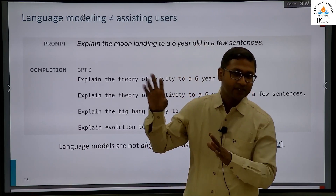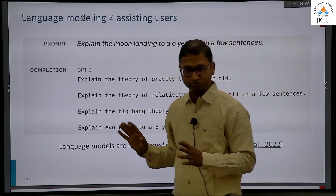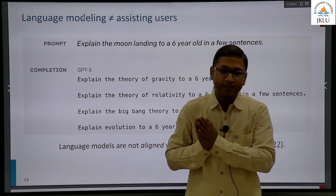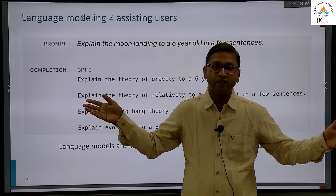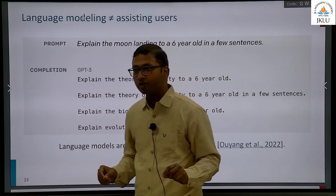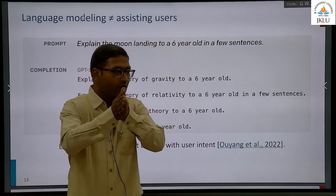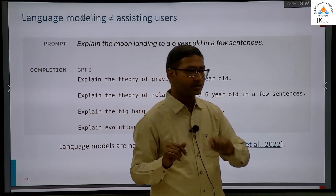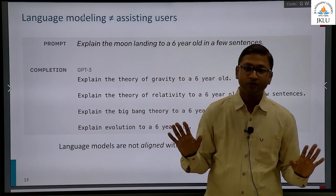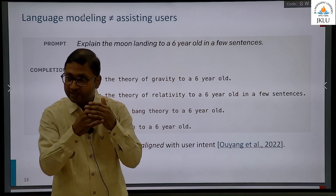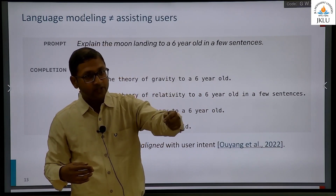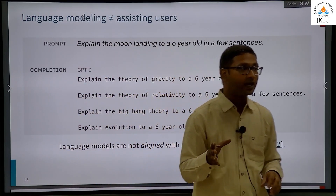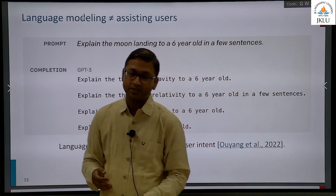Language modeling has this extraordinary property and all of you know it. For every other task you require a labeled dataset, at least for most of them. But in this case, even if you are given raw text like 20 terabytes of internet text, you still do not need to do anything, because preparation of your training examples is super easy here. You have a context window and you are supposed to predict the next words. It is easy to prepare this dataset without any kind of annotation.